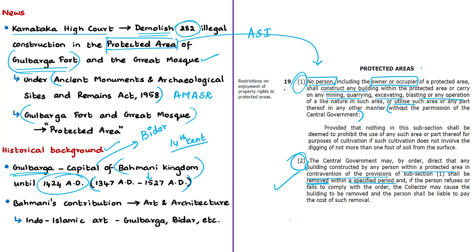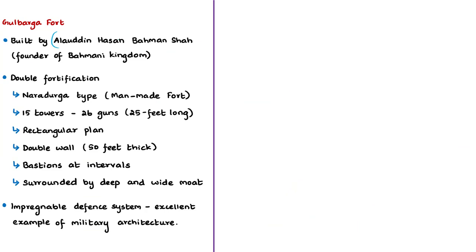On the whole, the Bahmanis ruled over most of the Deccan until the late 15th and early 16th century, when the kingdom was divided into five independent states. The most significant contribution of the Bahmanis was in the field of art and architecture. The buildings they left at Gulbarga, Bidar, and other places have an important place in the history of Indo-Islamic art. In this manner the Gulbarga fort also assumes significance, as it was built by Alauddin Hasan Bahman Shah, founder of the Bahmani dynasty.